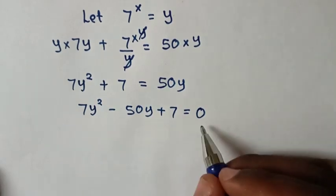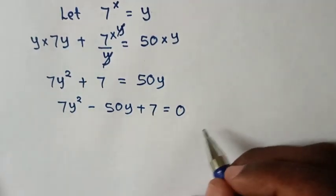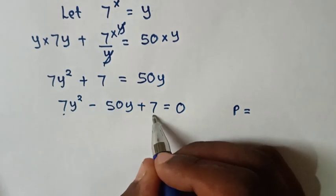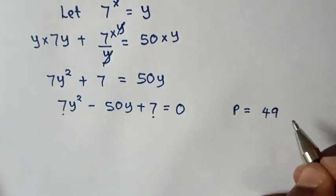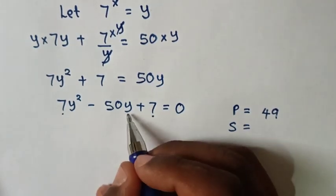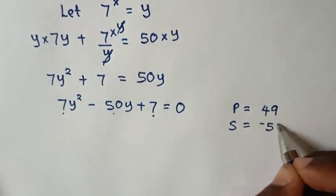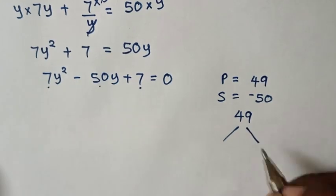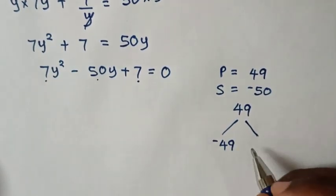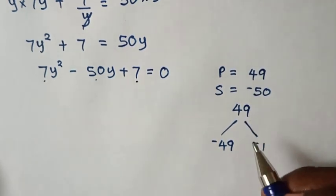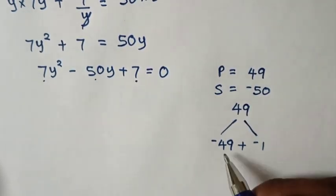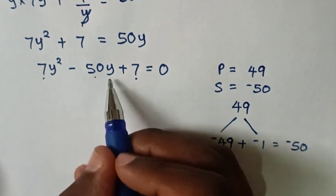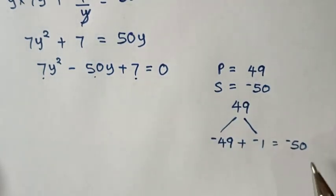We solve this quadratic by factorization. The product equals the coefficient of y² times the constant: 7 × 7 = 49. The sum equals the coefficient of y, which is -50. Two factors that multiply to 49 and add to -50 are -49 and -1, since (-49) × (-1) = 49 and (-49) + (-1) = -50.